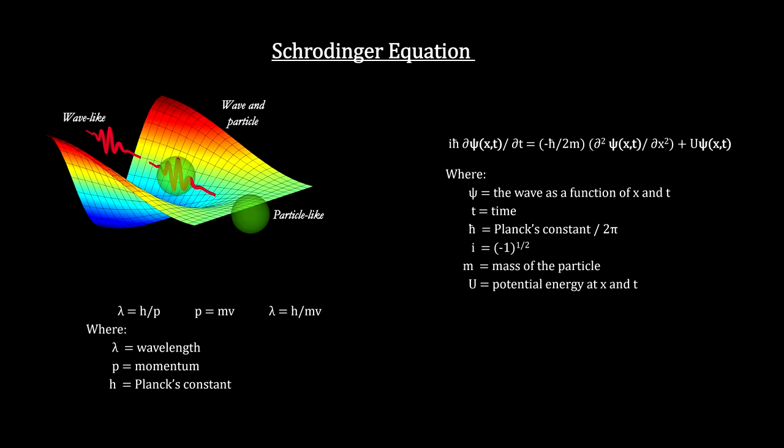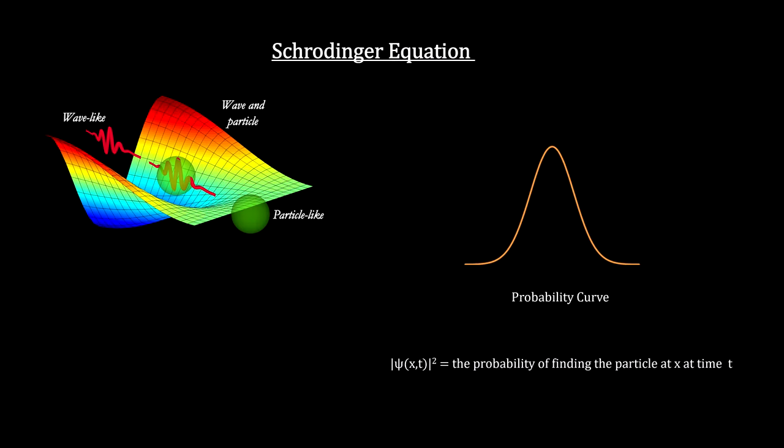Instead, it produced a probability curve for particle location. For free particles, the square of the wave function gives us the probability of experimentally finding the particle at a particular location at a particular time.